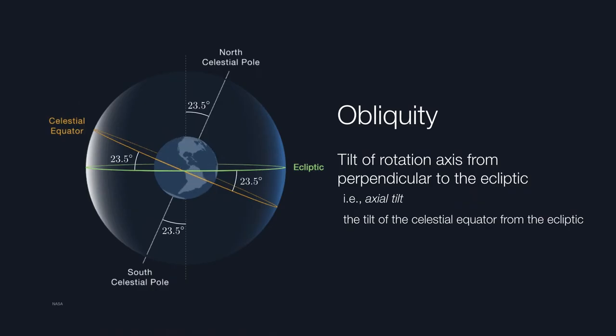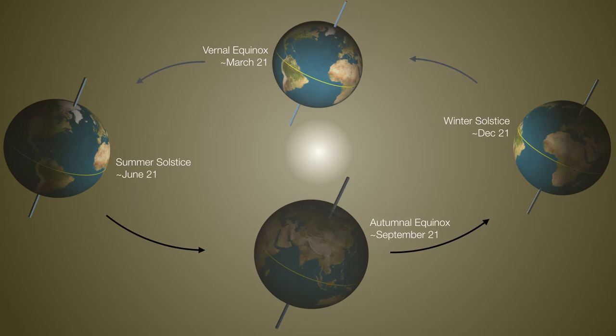Now that we understand obliquity in terms of axial tilt and how it affects our perception of the sun, let's understand how this translates into increased temperatures in the summertime and lower temperatures in wintertime. The axial tilt of the Earth always points in the same direction regardless of where Earth happens to be in its orbit. This has the effect of allowing one hemisphere to be tilted toward the sun during summertime in the northern hemisphere, and tilted away from the sun during wintertime. This is not to say the northern hemisphere is closer to the sun in summer or farther in winter — we're simply saying the hemisphere is tilted toward or away from the sun as Earth goes around in its orbit.